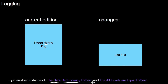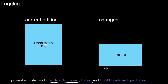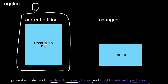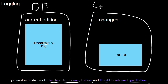You have redundancy. Logging helps in situations where you lose one of the things. If you lose the current edition, sometimes you can go back to it with the help of the log file, or vice versa. It may even be the case that if you lose a log file but still have the current edition, you have all data available. This is again another example of the data redundancy pattern. And it is also an example of the all-levels-are-equal pattern, because logging can be applied at many levels — typically in a database, where this is called the log file or the journal.